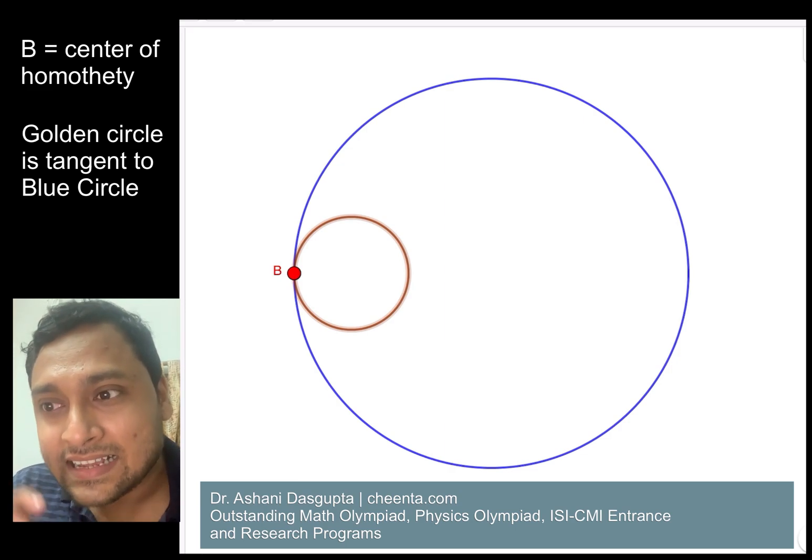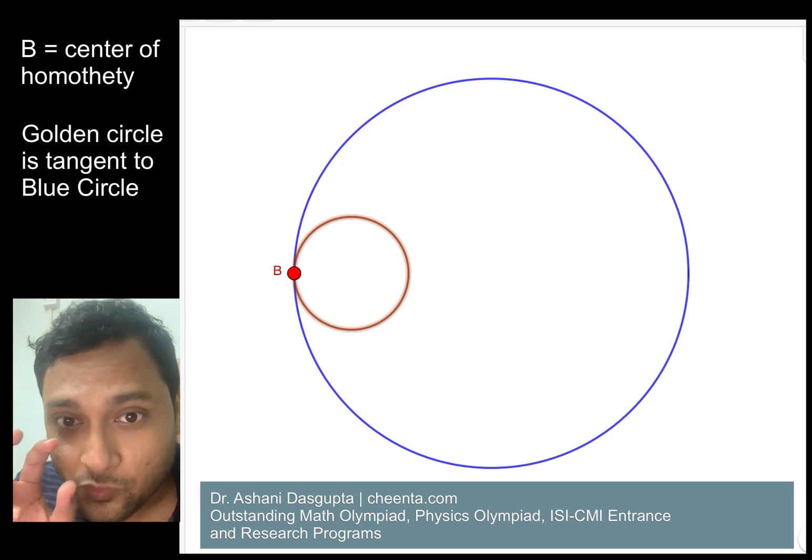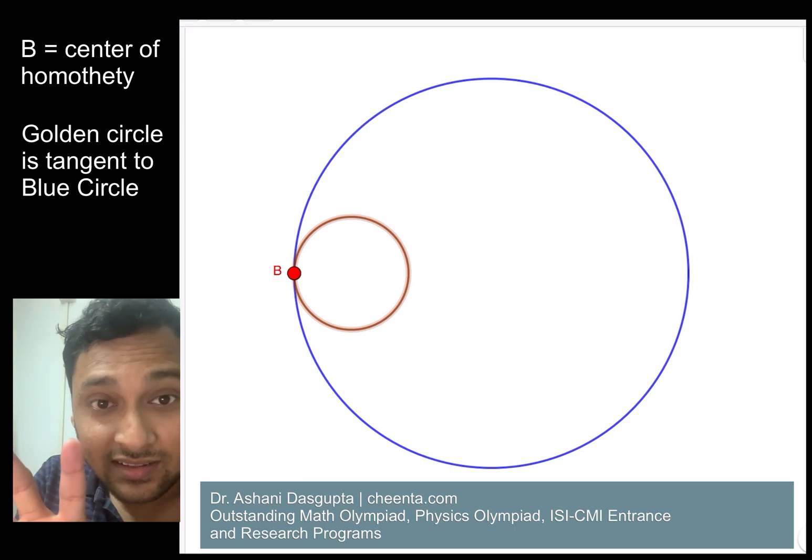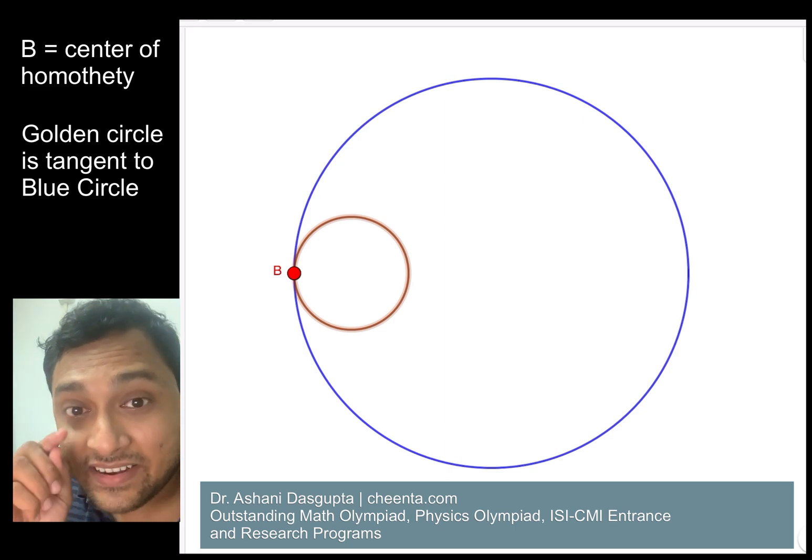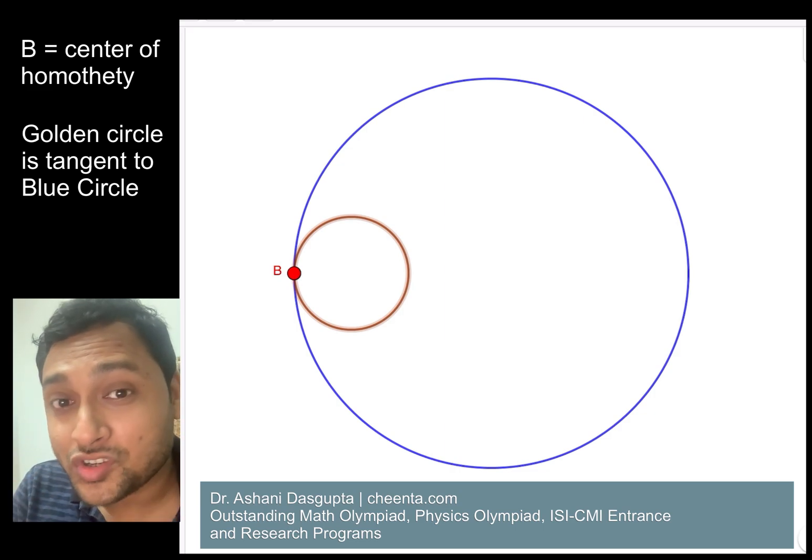It can grow into the blue circle and there is a smooth motion that makes it happen, and this motion is known as homothety. So let me show you a little bit - see this golden circle is sort of glowing, bulging up and it moves into the blue circle.